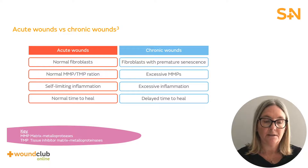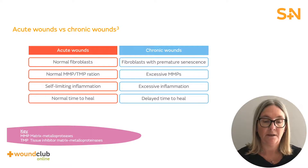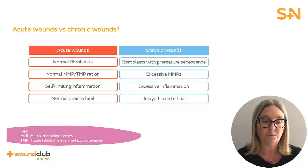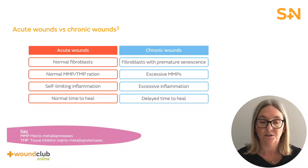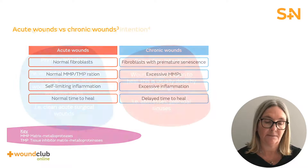Fibroblasts are often premature in chronic wounds, which disrupts their normal functioning. The main difference between acute and chronic wounds is the rate of healing. The time to chronic wound healing is significantly delayed, going on in some cases to become larger due to the high level of proteases.